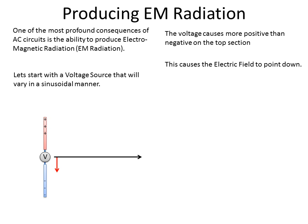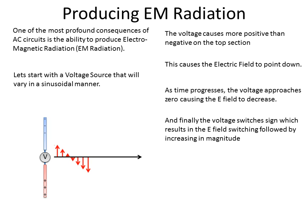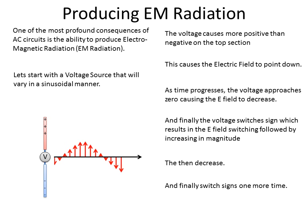As we vary the charge, we start with a lot of positive charges on one side, and the voltage source causes that number to decrease — going toward a more neutral state. As the sinusoidal field gets smaller, the electric field produced gets smaller and smaller. Then the signs switch: when the voltage reverses, the field reverses, and as the voltage grows larger the field grows larger again. You'll start to see that as a function of time, along this axis, we produce this radiation — this electric field that gets radiated outward.